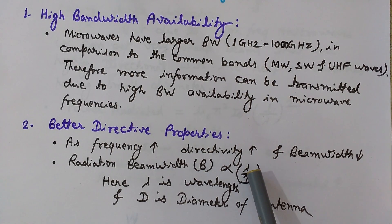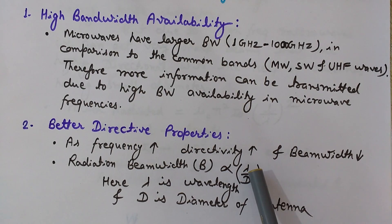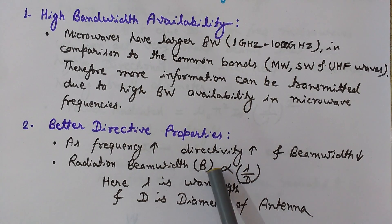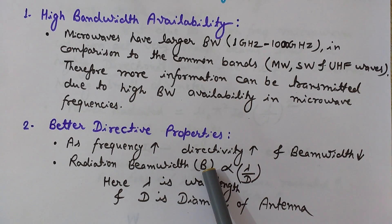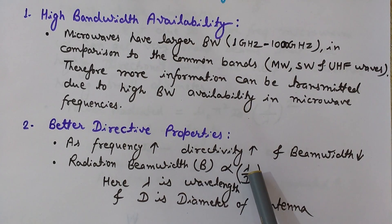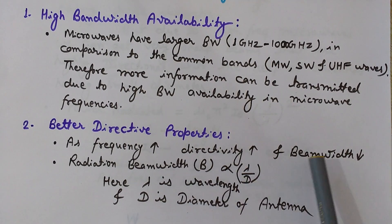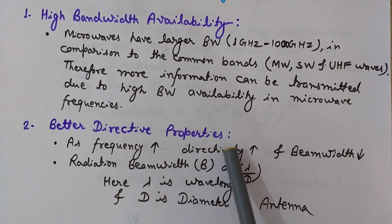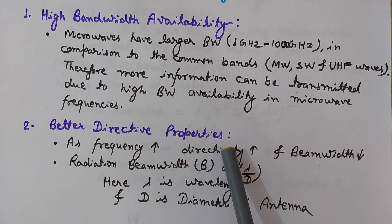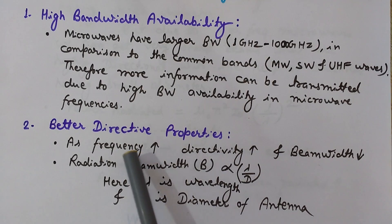Decreasing lambda means increasing frequency. In the case of microwaves we have lower wavelength because the frequency is high. Because of this low wavelength, the beam width is low, and low beam width means high directivity. At high frequency we get high directivity of microwaves.